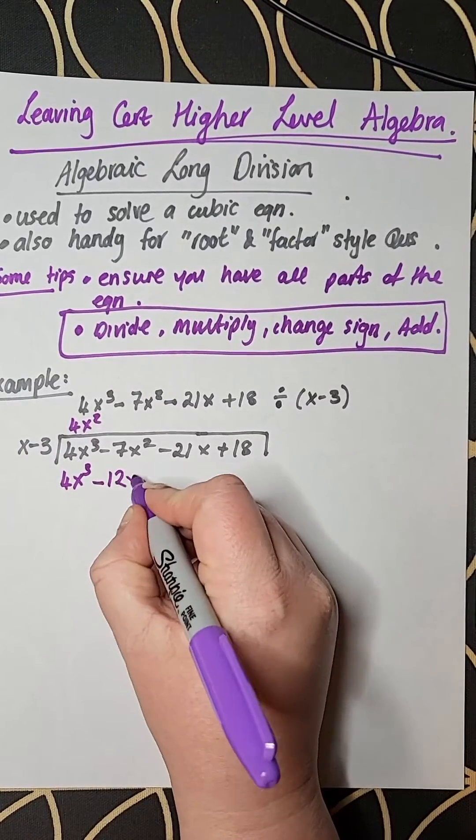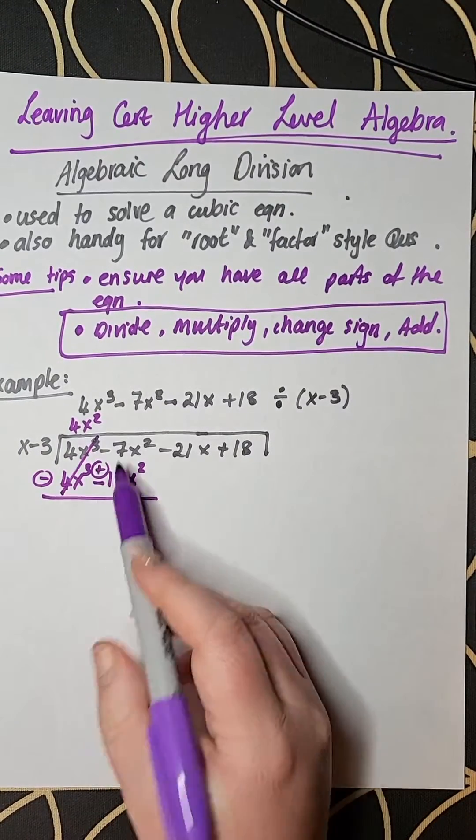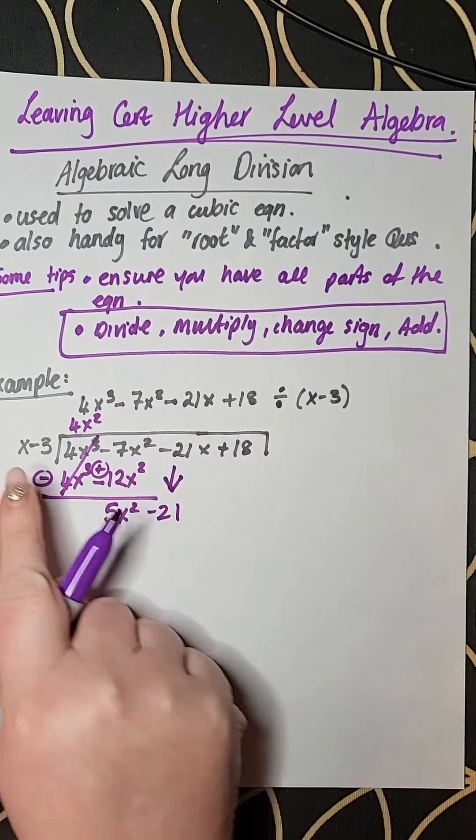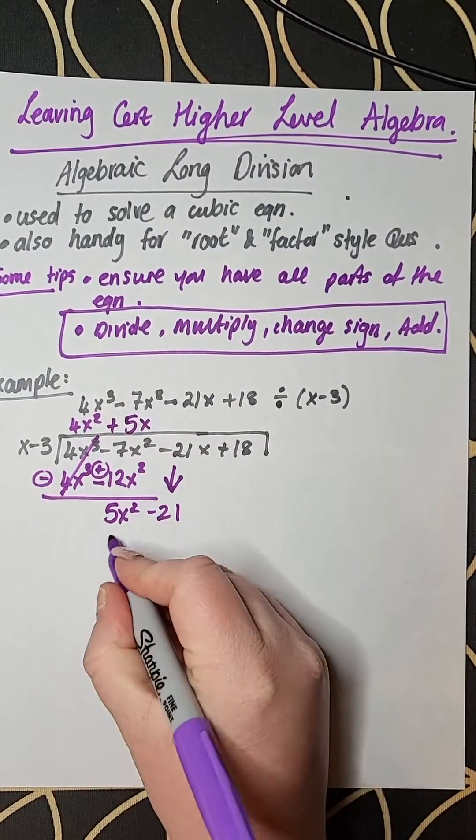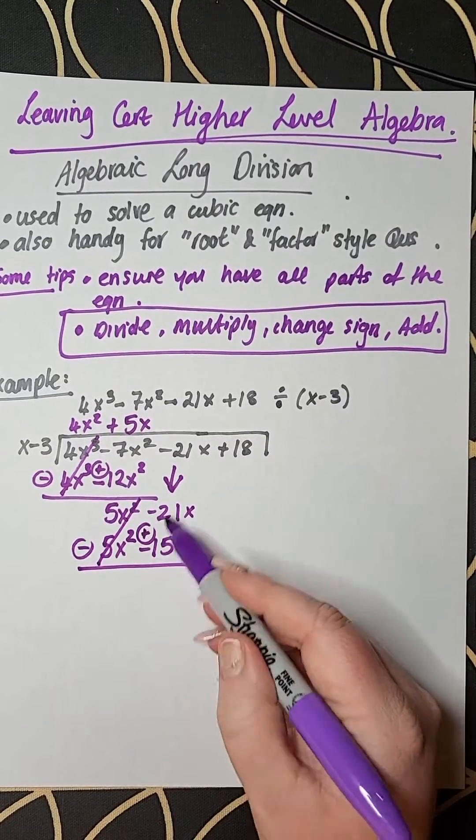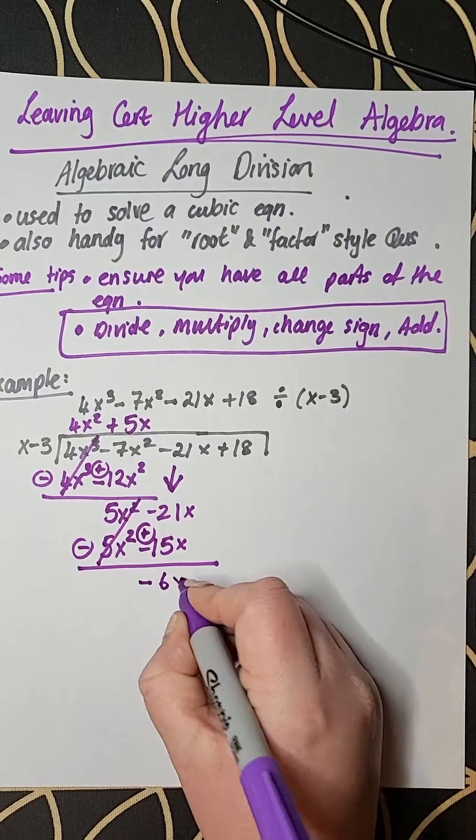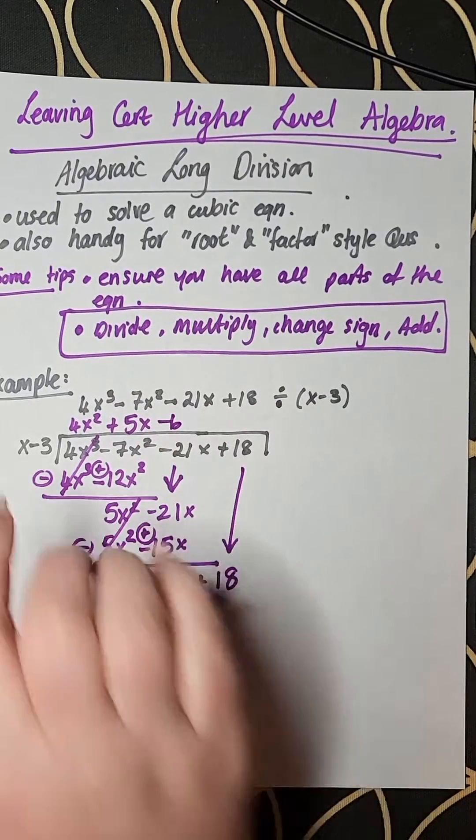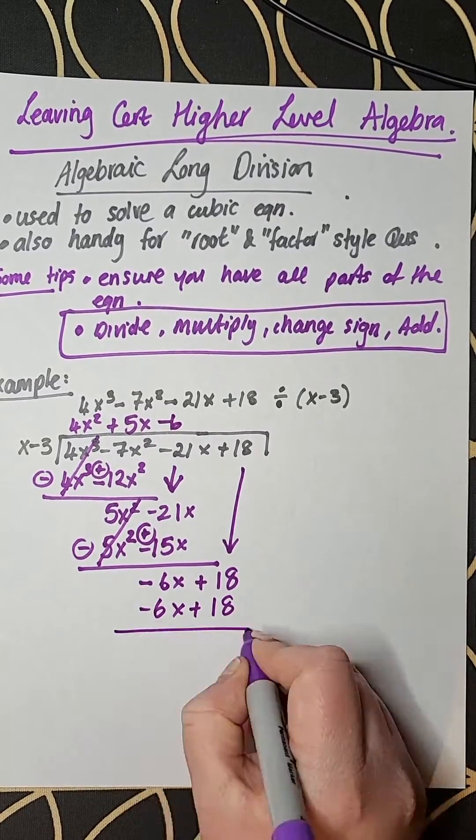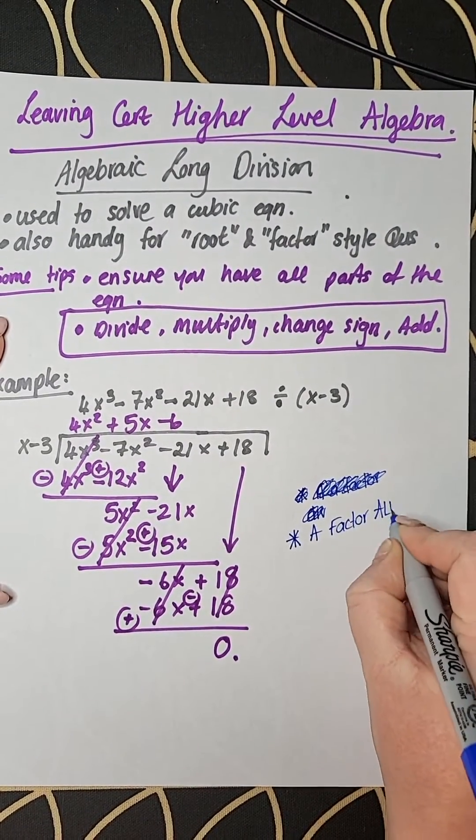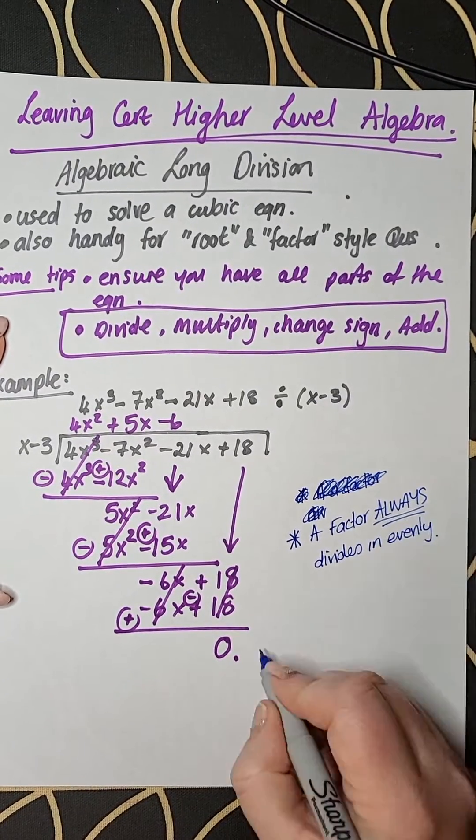So this is the first example here and you can see that I'm taking the x and I'm dividing it into 4x cubed. I get an answer 4x squared. When I put that up on the top line, that's what I multiply with. So 4x squared is going to multiply by the x and by the minus 3 and you can see me write that in. And then I change the signs of the new line I've written down, the lowest line on the calculation and I add them. And I repeat that process over and over again.